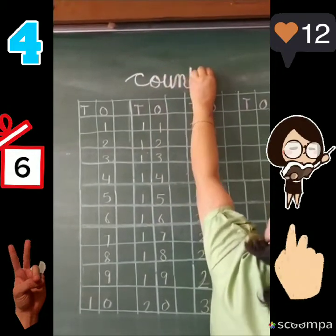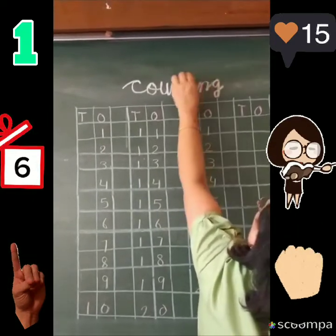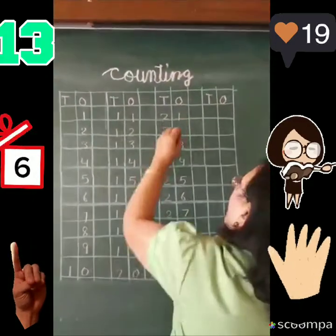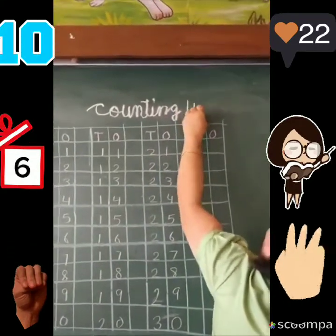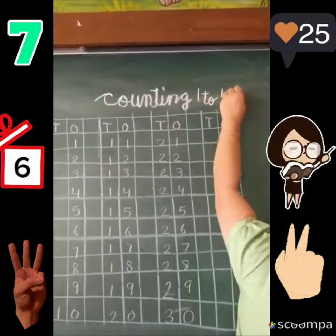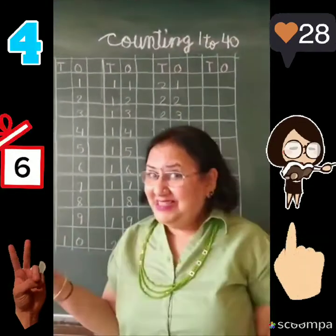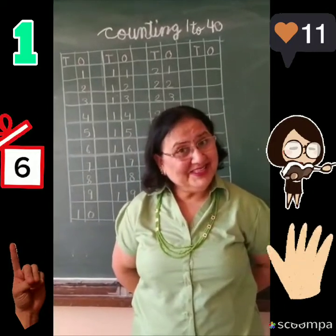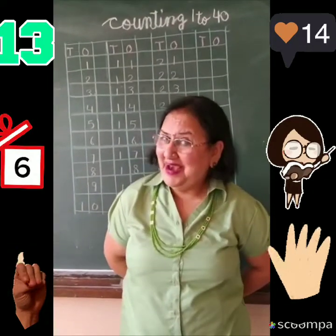See, kahan tak kar rahe hain? I am writing counting — one, two... forty. I increased one line. Ek lang ne increase kar di maine. Ek lang barha di.